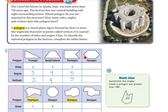Let's look at the hexagon. First, we have our sides: one, two, three, four, five, six — six sides. Let's look at the angles: one, two, three, four, five, six — six angles. And then let's look at the vertices: one, two, three, four, five, six — six vertices.